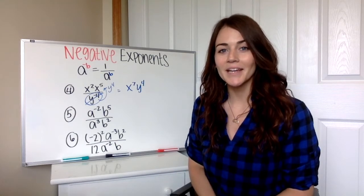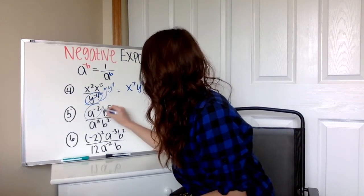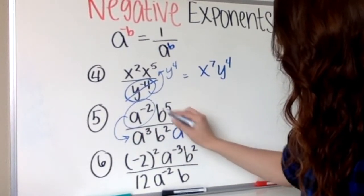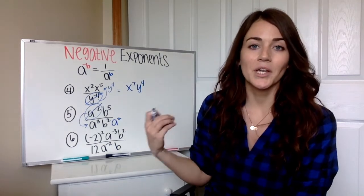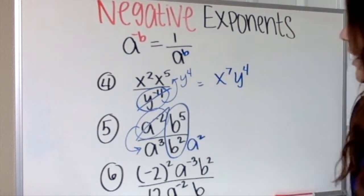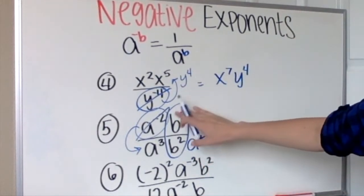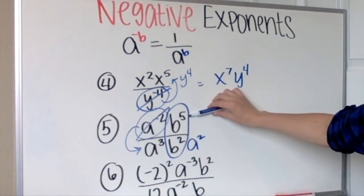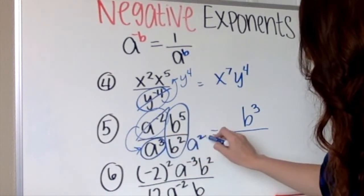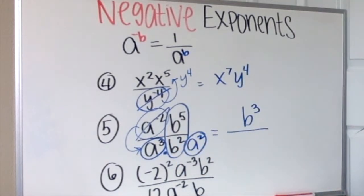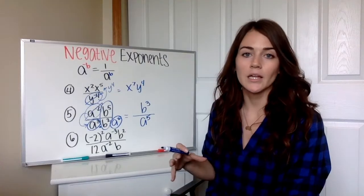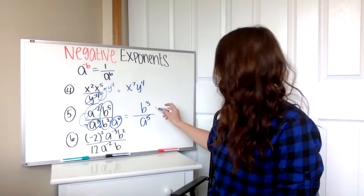Number 5: again, we're going to get rid of those negative exponents first. So a to the negative 2 on top — if it's on top, we move it to the bottom. So a squared is now on bottom. Now I combine things with the same base. I have b to the fifth over b squared — using quotient rule, 5 minus 2 is 3, and more b's are on top, so b to the third goes on top. Then our a's are both on bottom, being multiplied — product rule tells us to add exponents: a to the 3 plus 2, which is a to the fifth on bottom. Our final answer is b to the third over a to the fifth.